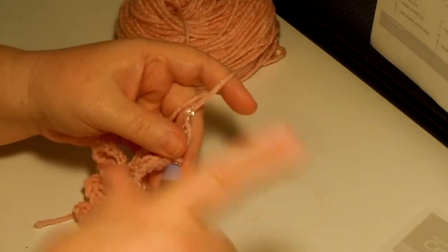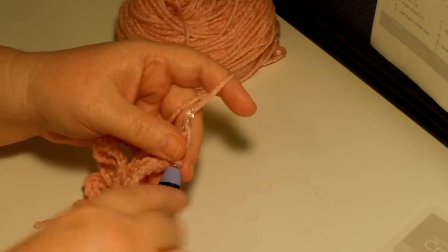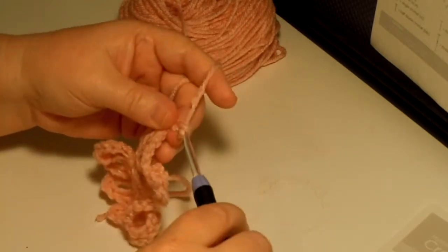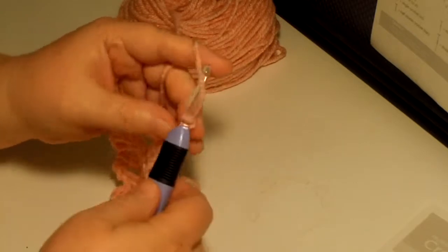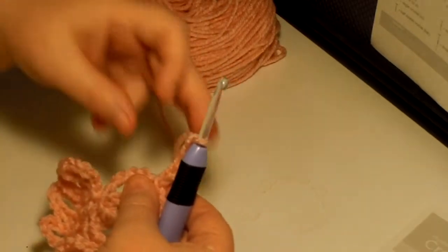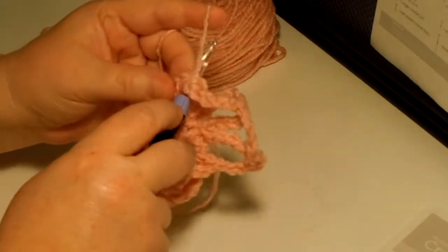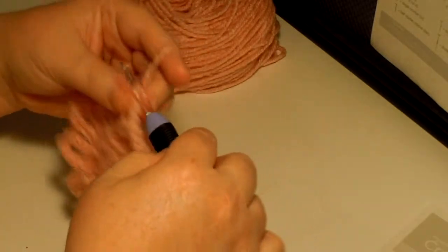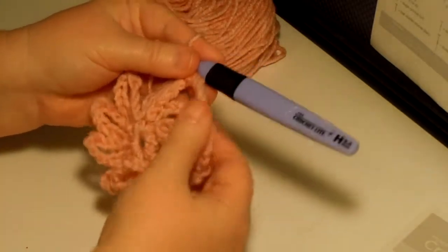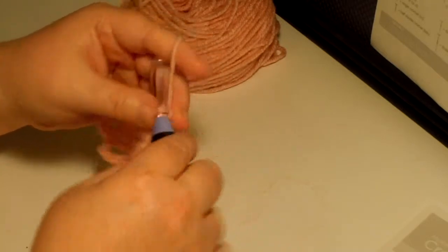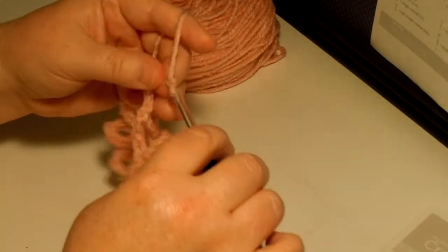You're going to chain five and then do your one single crochet in each chain eleven space. One, two, three, four, five and then we do a single crochet in the next chain eleven space. There we go, starting like a ring around it. We do five chains, one, two, three, four, five.